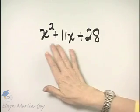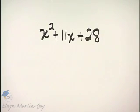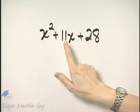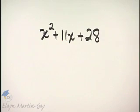Let's factor this trinomial. What's the first step? Always see if there's a greatest common factor other than 1 or negative 1 that can be factored out.